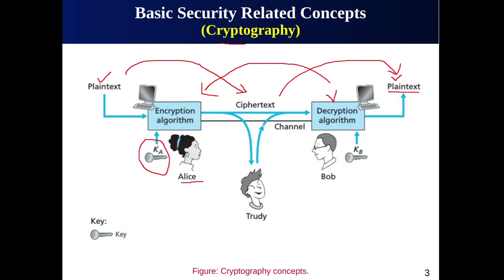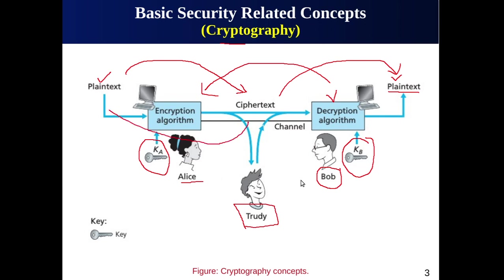We also have a terminology known as cryptanalysis, also called code breaking — it is the science of analyzing and breaking secure communication without knowing the key. Bob can derive the plain text from the ciphertext using his key K_B, but an attacker like Trudy would try to analyze and break this secure communication without knowing the keys. The study of principles and methods for transforming ciphertext back into plain text without knowledge of the keys is known as cryptanalysis. And finally, cryptology is the science that encompasses both cryptography and cryptanalysis.